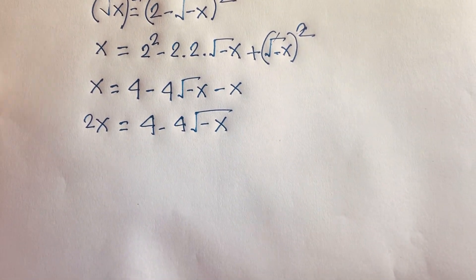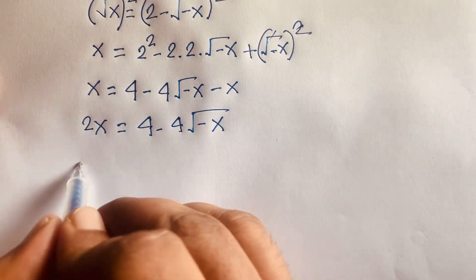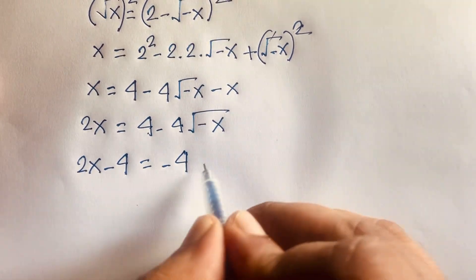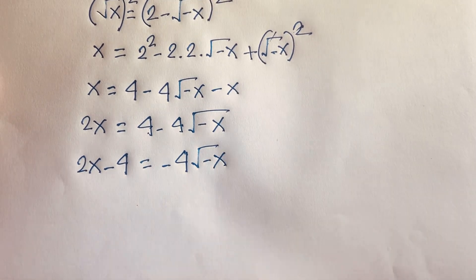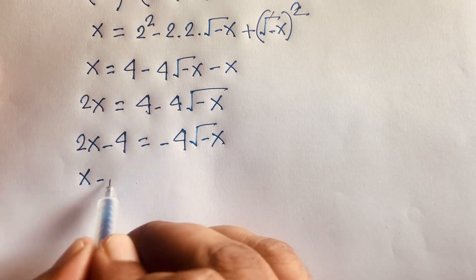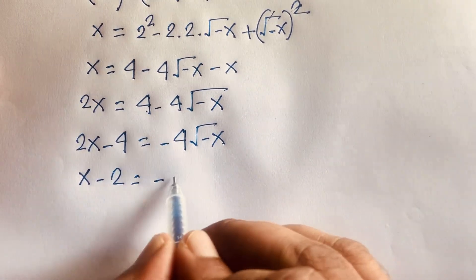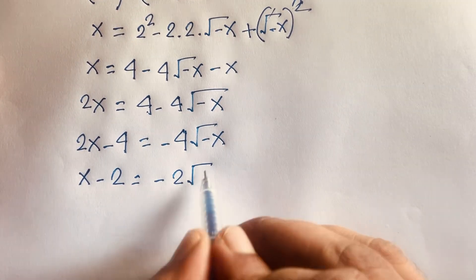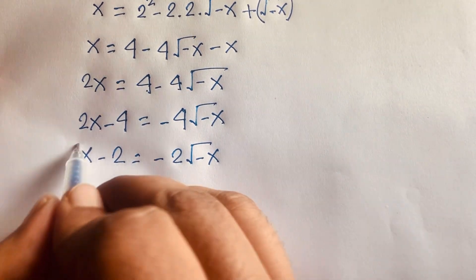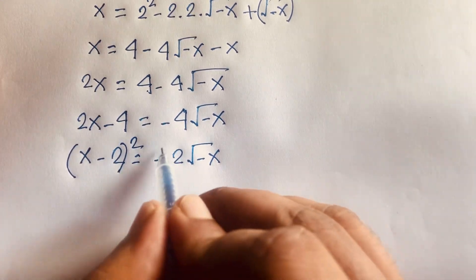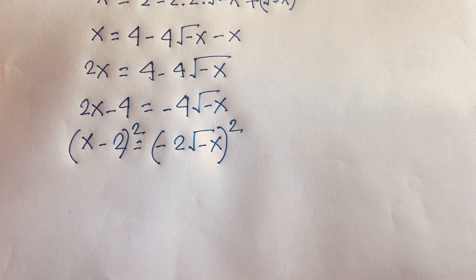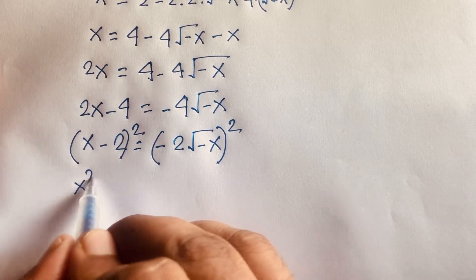Rearranging: 2x minus 4 equals negative 4 times square root of negative x. Dividing both sides by 2 gives x minus 2 equals negative 2 times square root of negative x. Now I square both sides again to eliminate the square root.